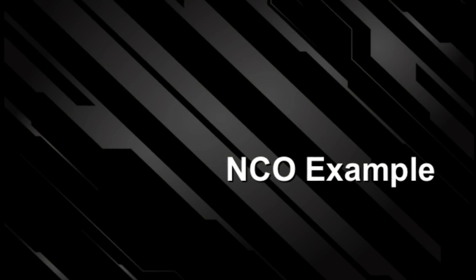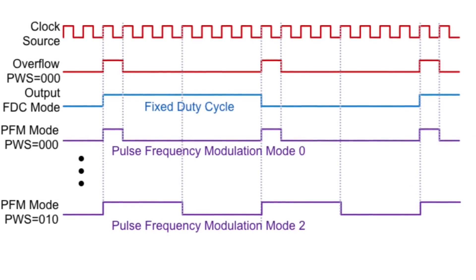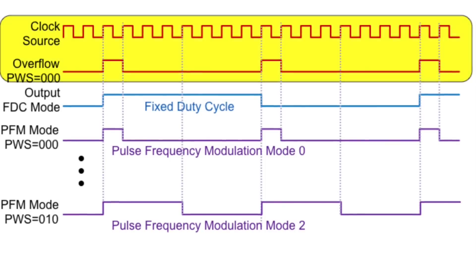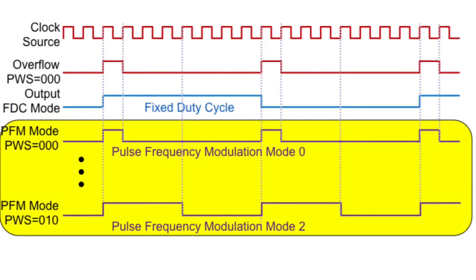Now let's look at an example to illustrate how the NCO output signals operate. This chart shows a graphical representation of the NCO in operation for both output modes. The red signals show the input clock, and a pulse is generated when the accumulator overflows. The blue signal shows the fixed duty cycle mode, which produces a 50% square wave with the output toggling between high and low on each accumulator overflow. The purple signals show the pulse frequency modulation mode, which produces a single pulse on each accumulator overflow. The width of the pulse is determined by the PWS bit settings — this graphic shows a 0-0-0 setting for a single clock pulse and a 0-1-0 or 4 clock pulse setting.